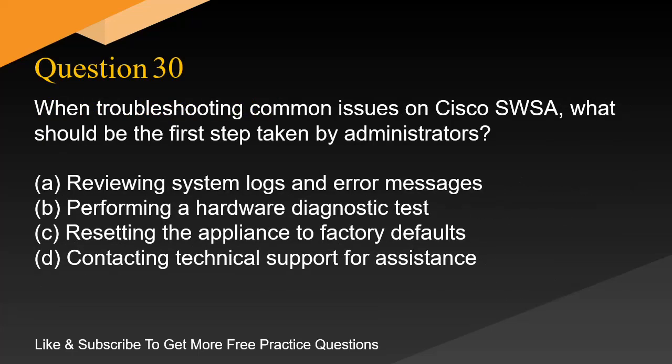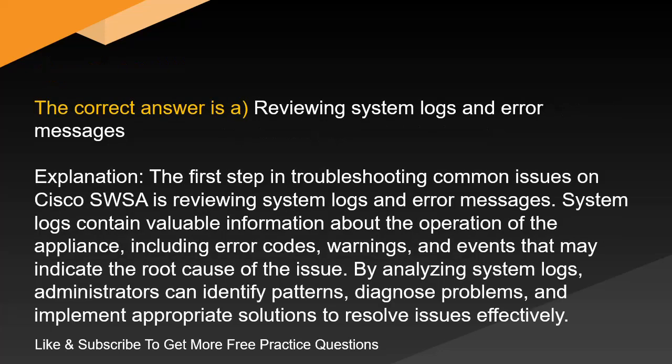Question 30. When troubleshooting common issues on Cisco SWSA, what should be the first step taken by administrators? A. Reviewing system logs and error messages. B. Performing a hardware diagnostic test. C. Resetting the appliance to factory defaults. D. Contacting technical support for assistance. The correct answer is A. Reviewing system logs and error messages. Explanation. The first step in troubleshooting common issues on Cisco SWSA is reviewing system logs and error messages. System logs contain valuable information about the operation of the appliance, including error codes, warnings, and events that may indicate the root cause of the issue. By analyzing system logs, administrators can identify patterns, diagnose problems, and implement appropriate solutions to resolve issues effectively.